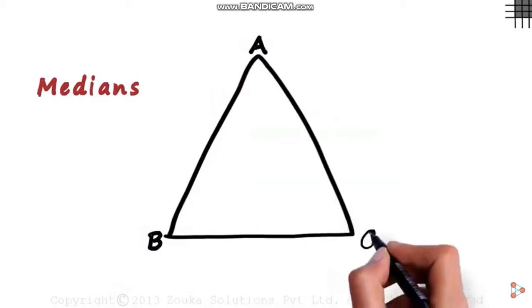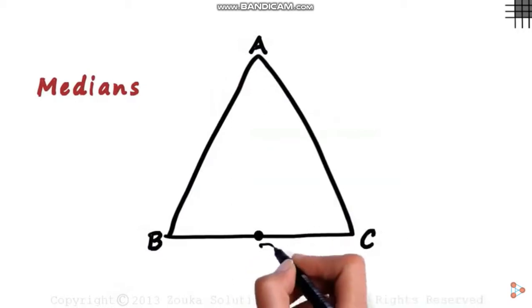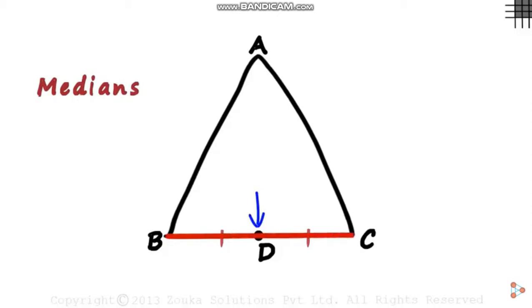Look at triangle ABC. Assume we have a point D on segment BC such that BD equals DC. This means D is the midpoint of segment BC, right? Segment BC is the side opposite to vertex A. The segment drawn from the vertex to the midpoint of its opposite side is called a median. So segment AD is one of the medians of triangle ABC.